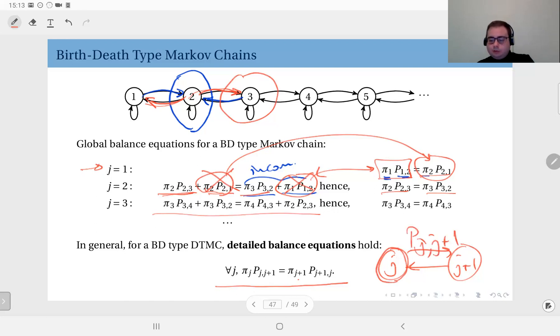The probability of being in this state times this probability should equal the probability the Markov chain is in this state, π_j+1, times this transition probability. As you see, the global balance equations become simpler, which we call detailed balance equations. Detailed balance equations hold in case you have a birth-death type Markov chain, which are usually easier to solve. Hence we use birth-death type chains a lot in many modeling scenarios.